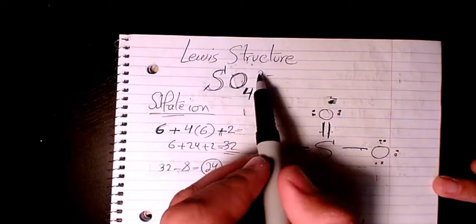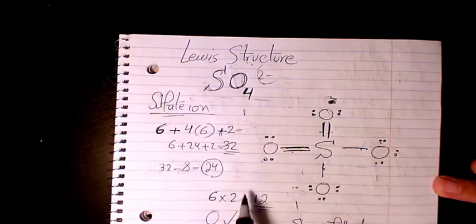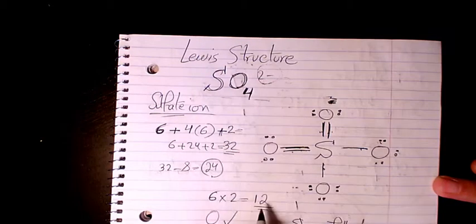Because of this negative two in here, so we have two extra because of this negative two there.